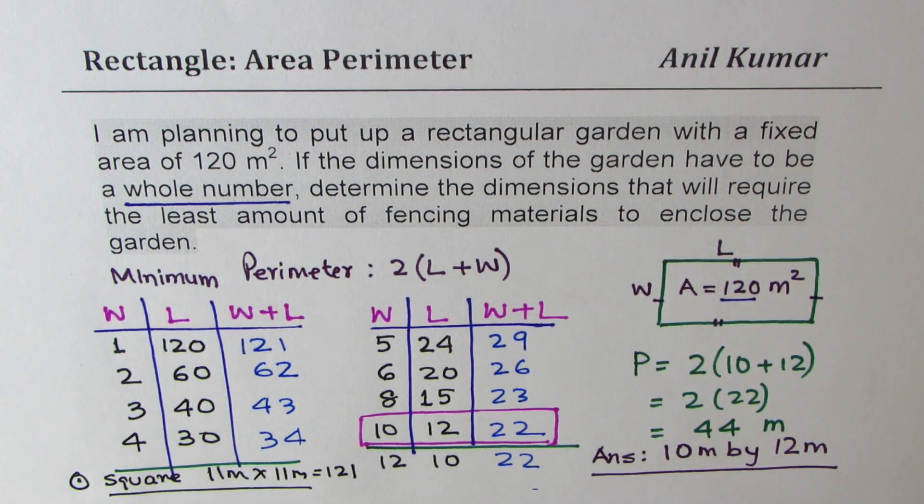Normally, it is the square which gives you minimum perimeter. Now, in this particular case, 11 times 11 is 121, more than 120. So our answer will be restricted to 10 meters by 12 meters. Is that correct?